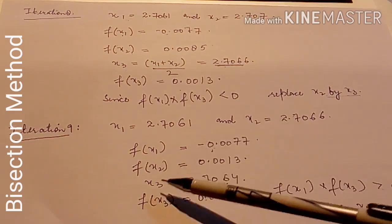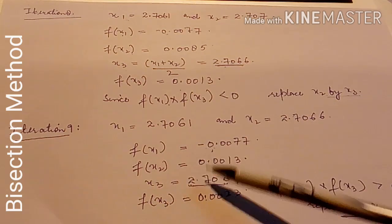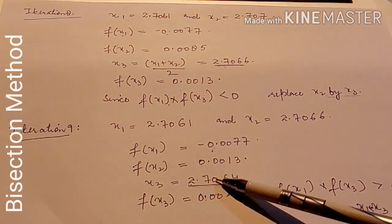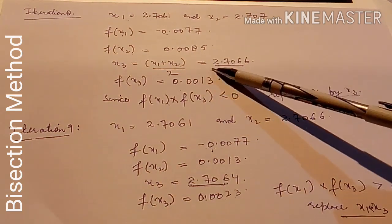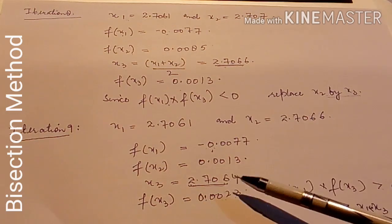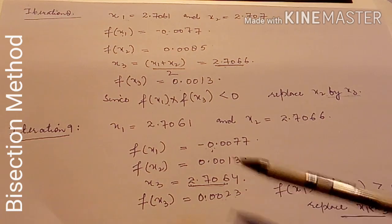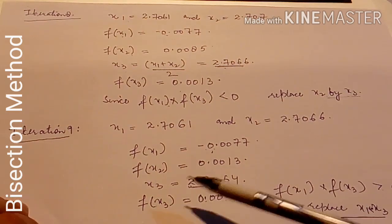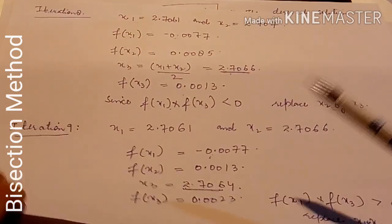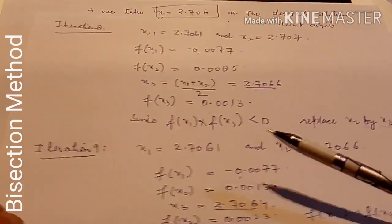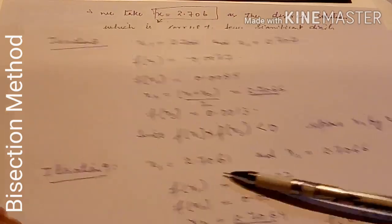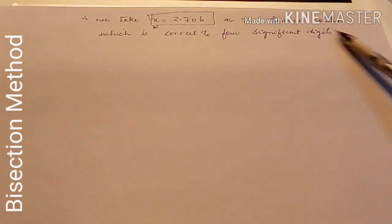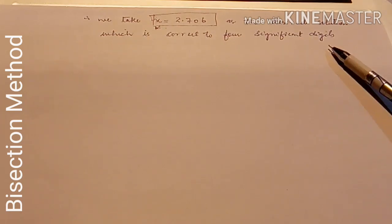In iteration 9, the value of x3 again comes as 2.706 to four significant digits, the same as the previous iterations. When x3 does not change in successive iterations, we stop. Since the value of x3 remained the same for the last three iterations, we conclude that x = 2.706 is the desired root, correct to four significant digits.